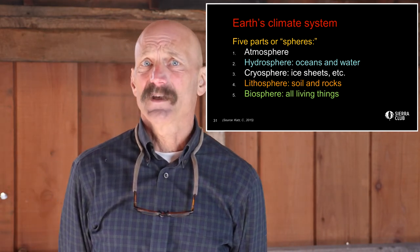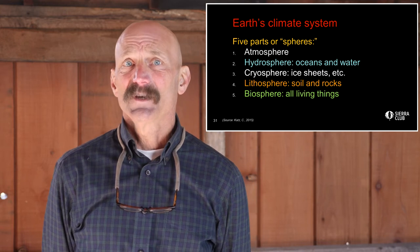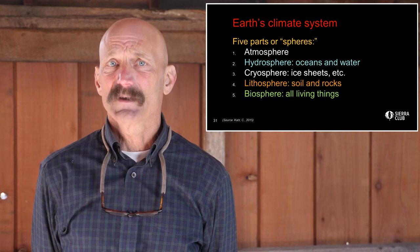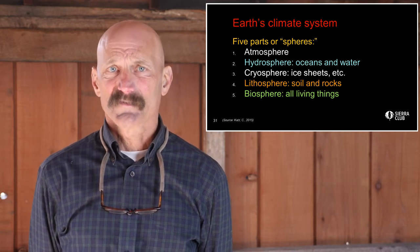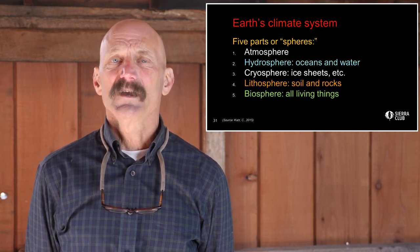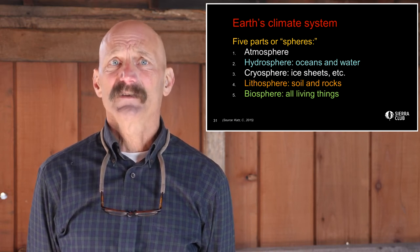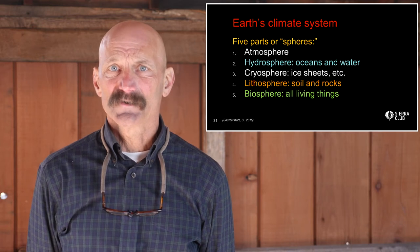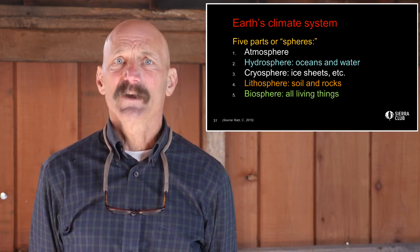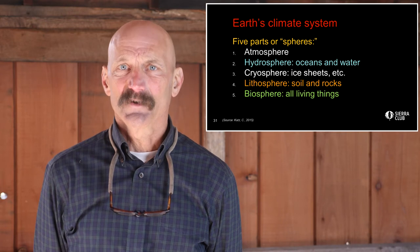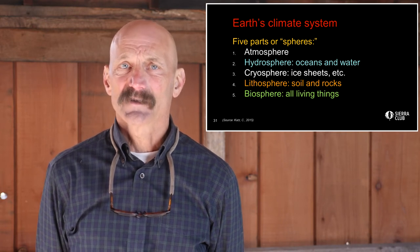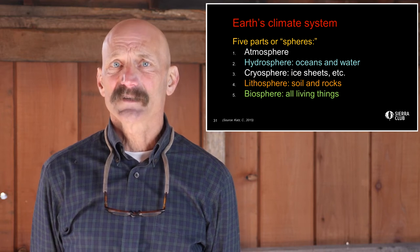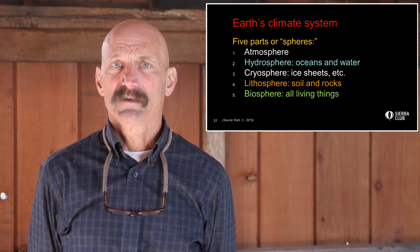Earth's climate system is thought of as five parts or spheres. There's the atmosphere — the air we breathe, the most obvious part. There's the hydrosphere, the 71% of the Earth's surface covered by the oceans and all the waters of the world. There's the cryosphere, the roughly 10% permanently frozen — the glaciers, ice caps, and great ice sheets. There's the lithosphere, the soil and rocks. And finally, the biosphere — all living things, both flora and fauna, including us.